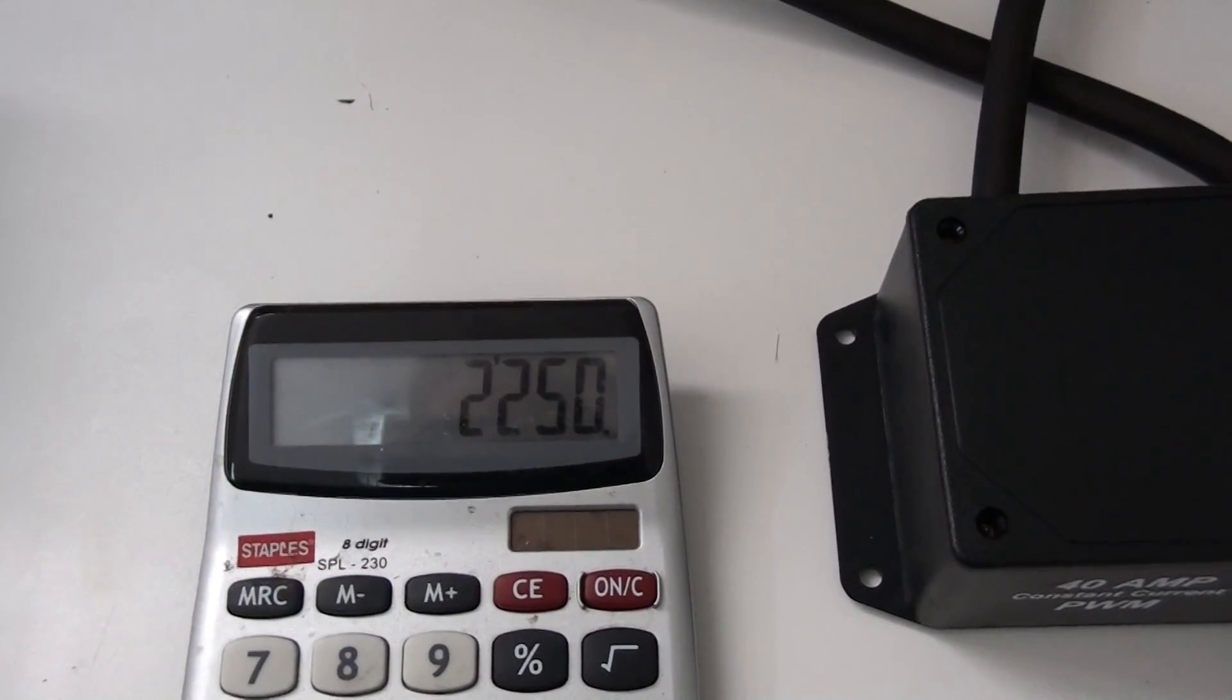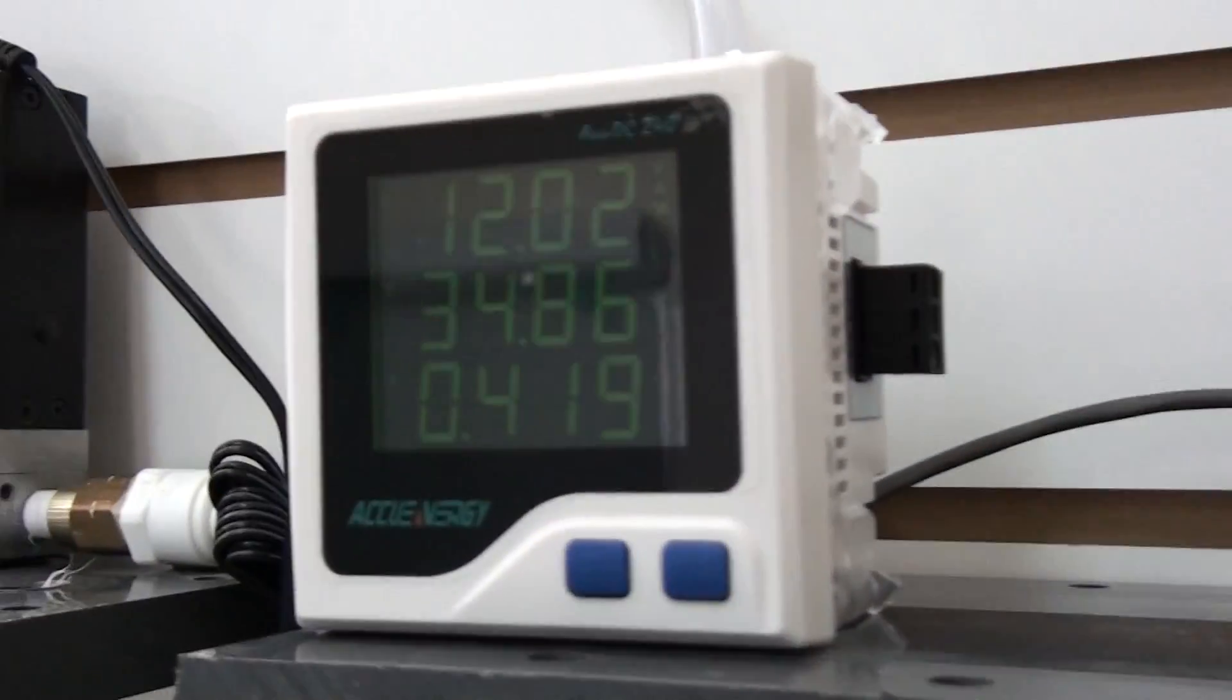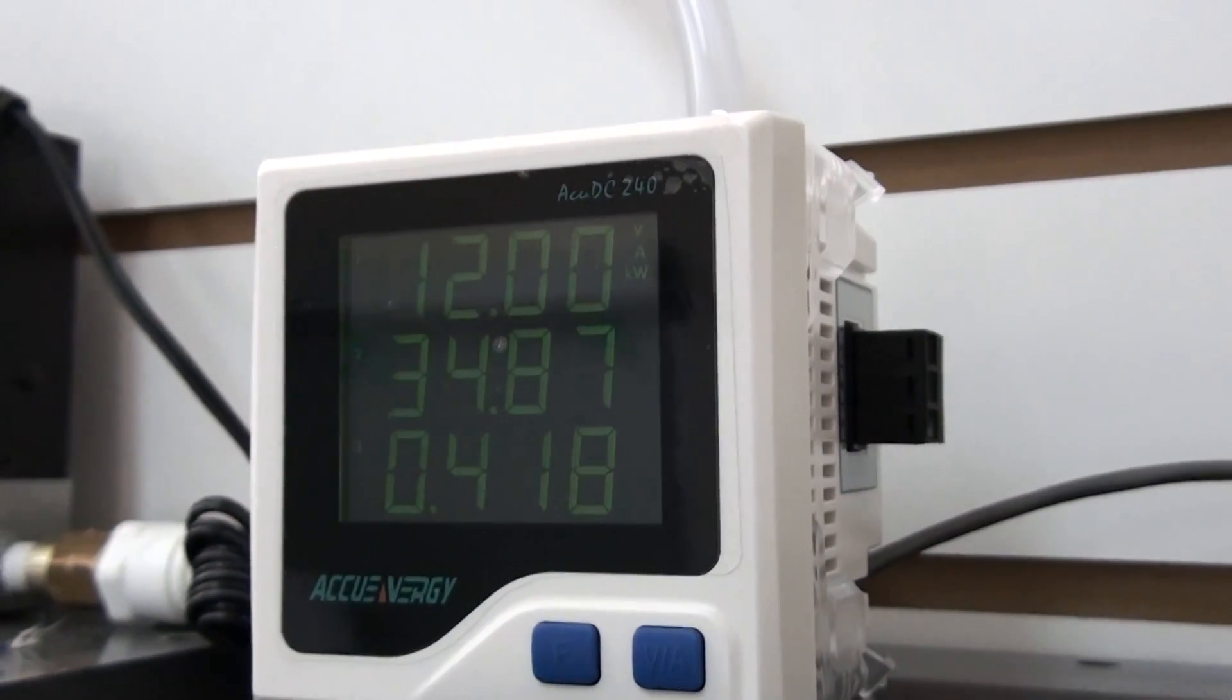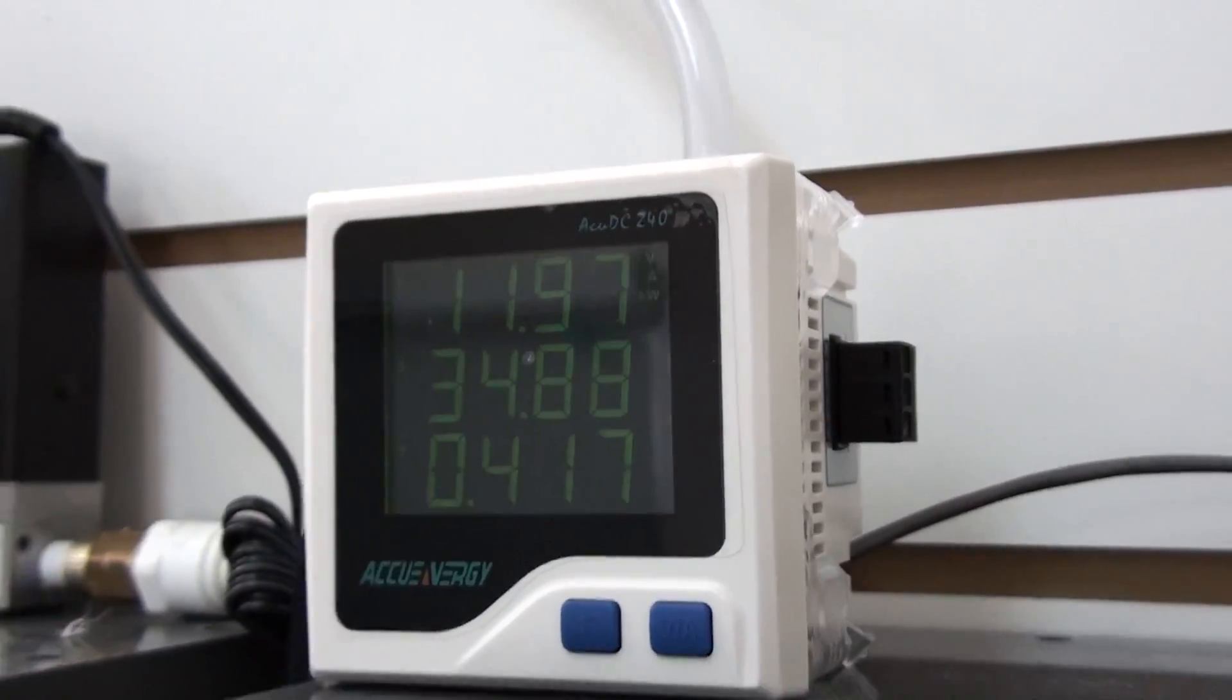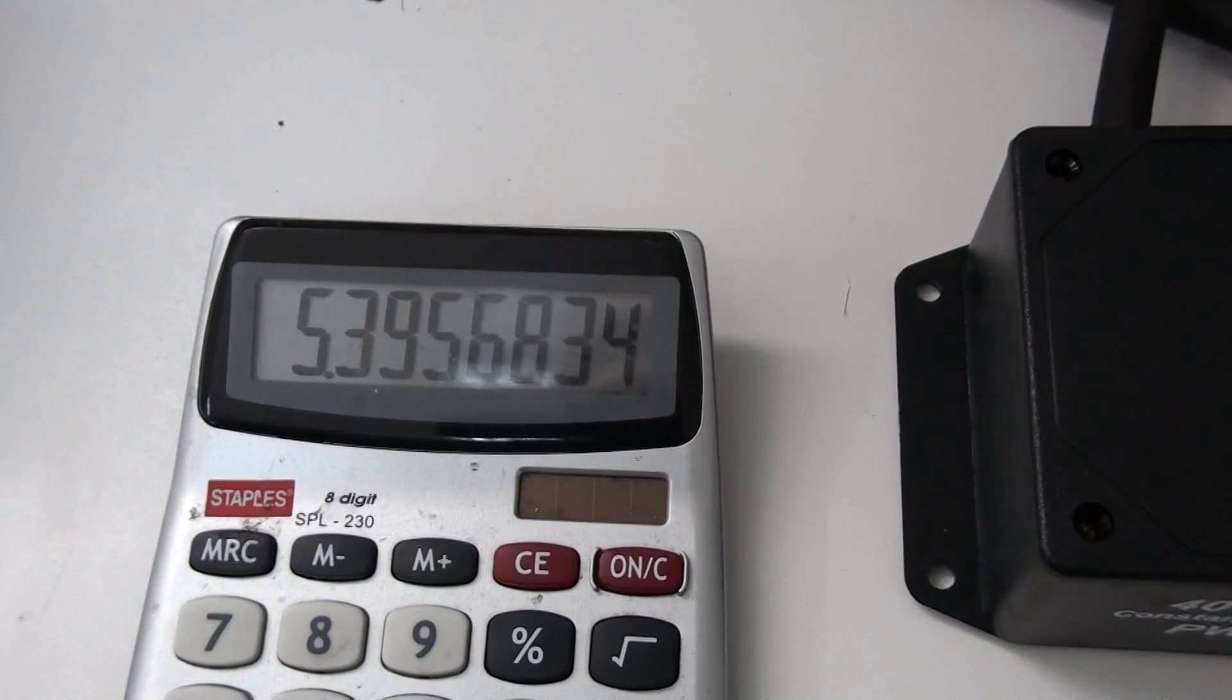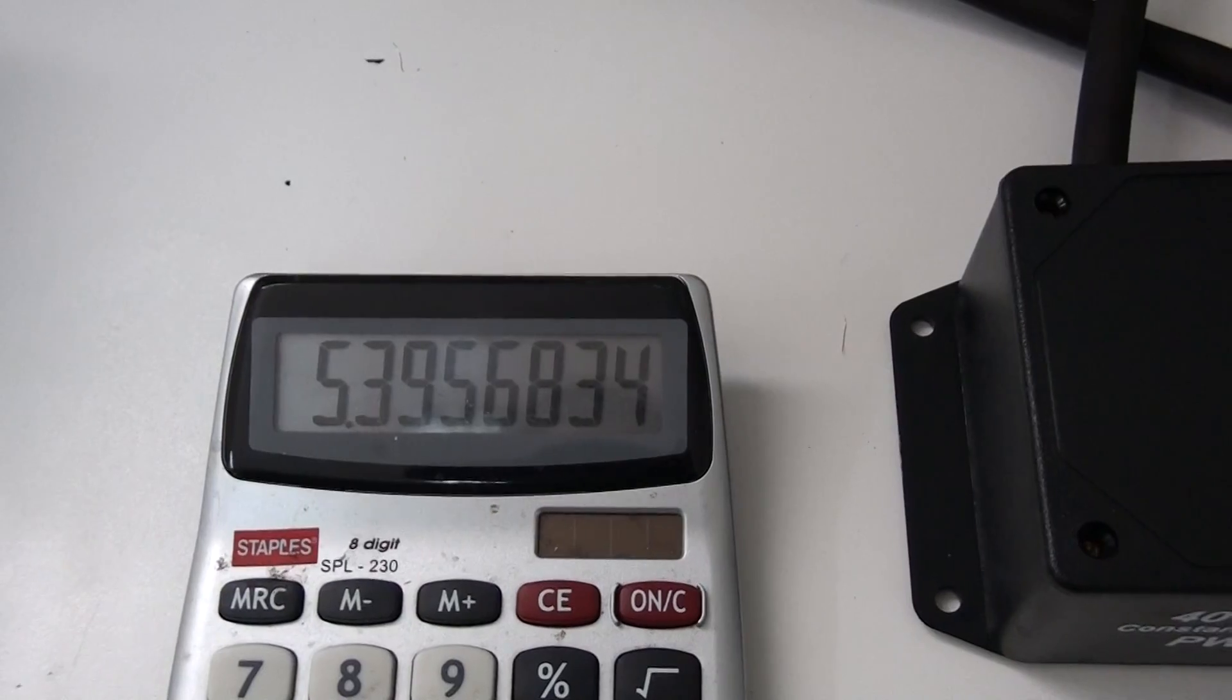2250, that's 2250 milliliters divided by our watts. This gauge here shows at the top volts, in the middle amperage, and at the bottom watts. So we'll go 417 watts, and that gives us 5.39 mmW, which is milliliters per minute per watt.